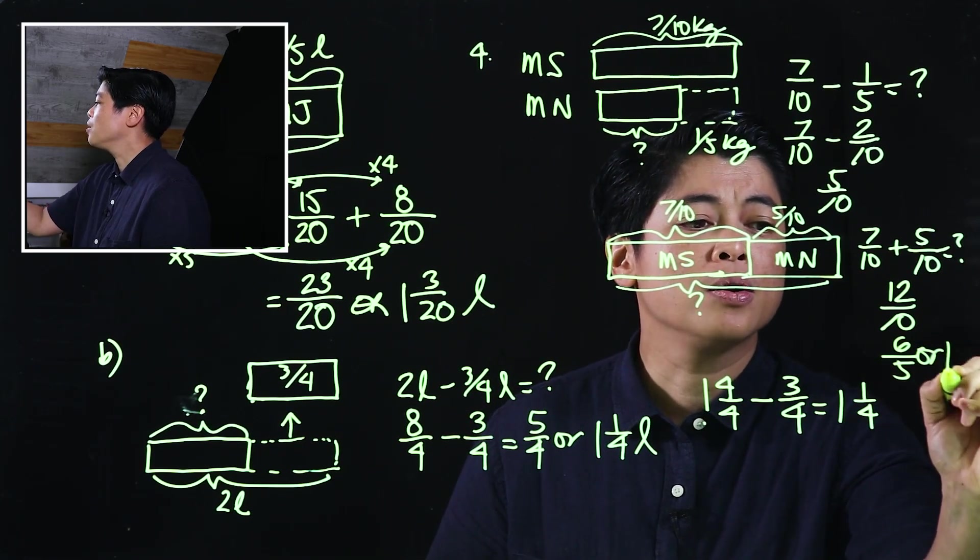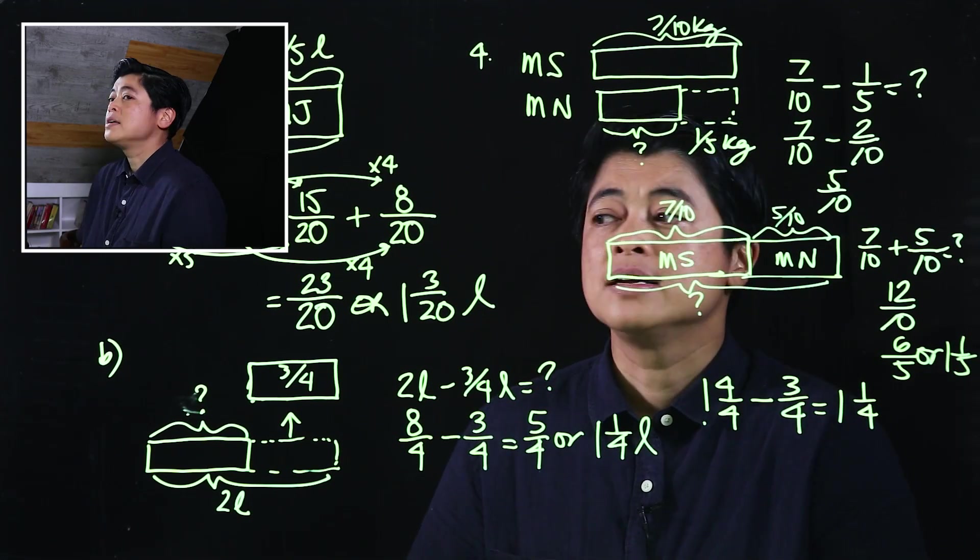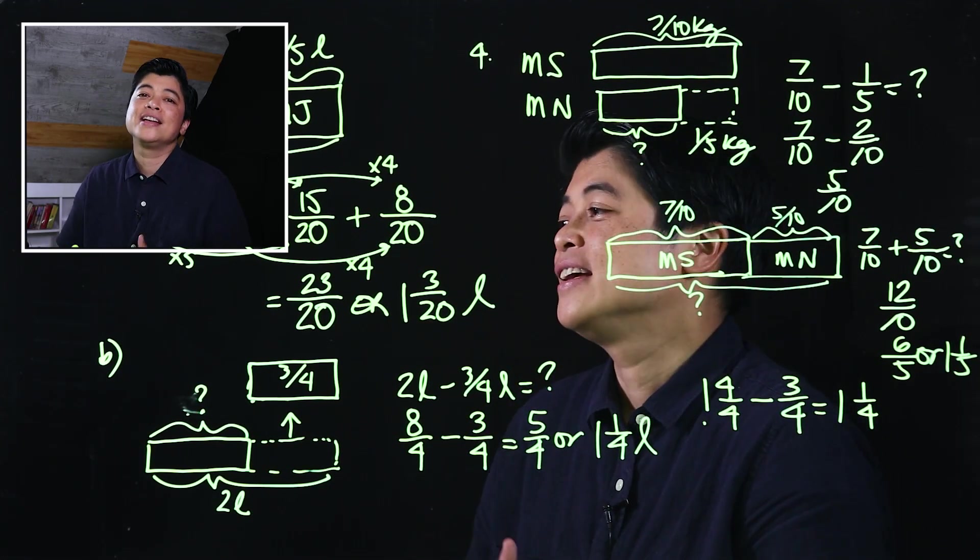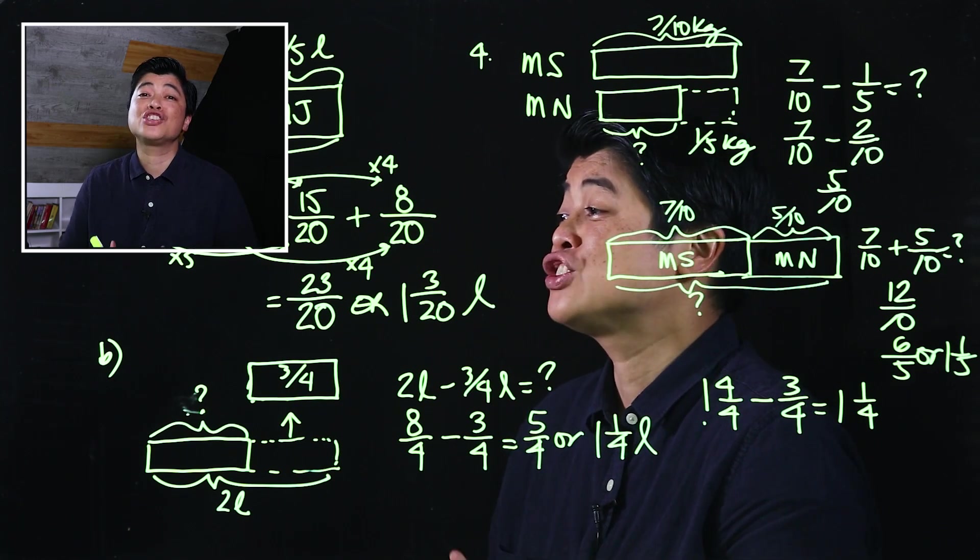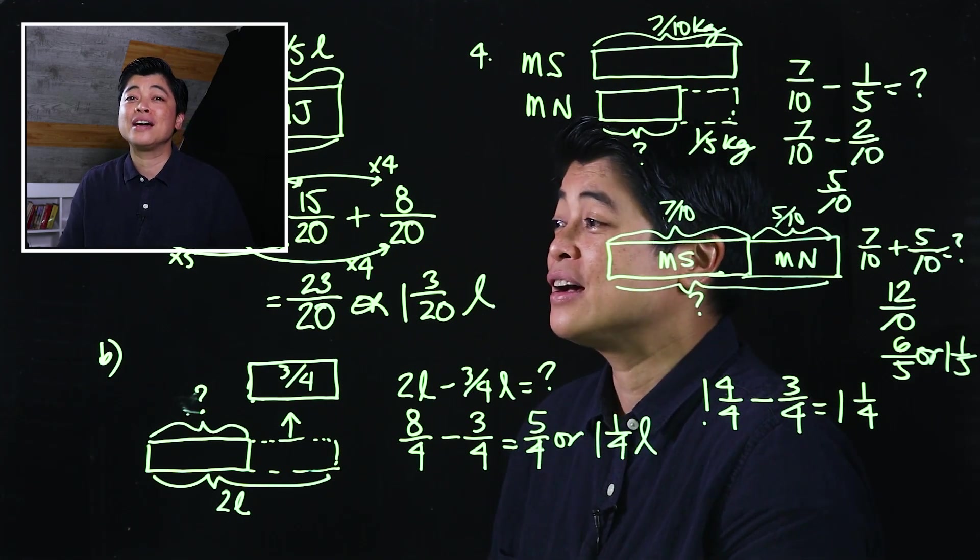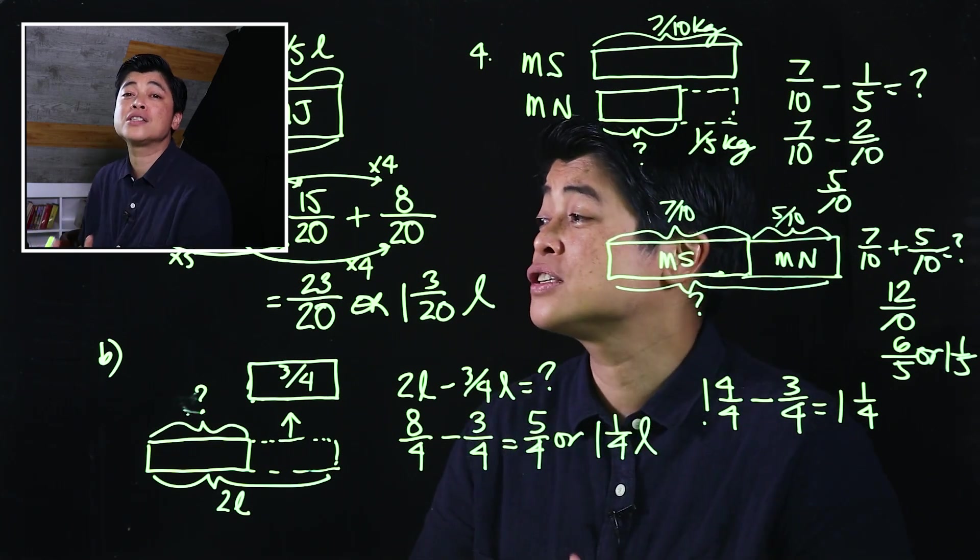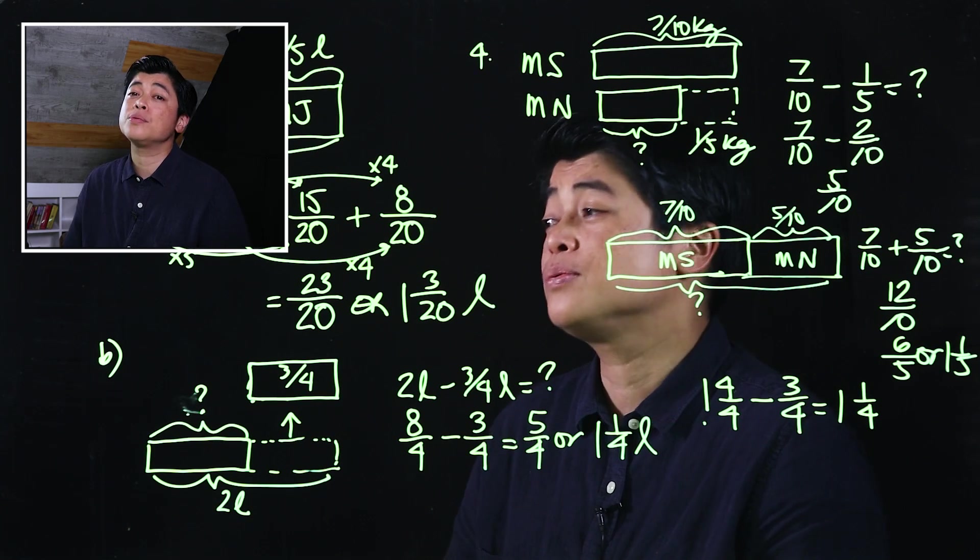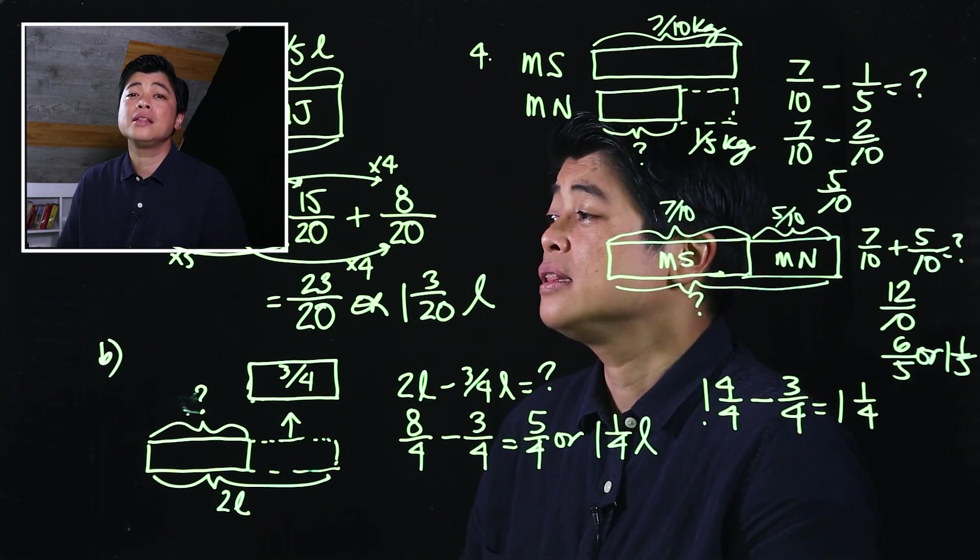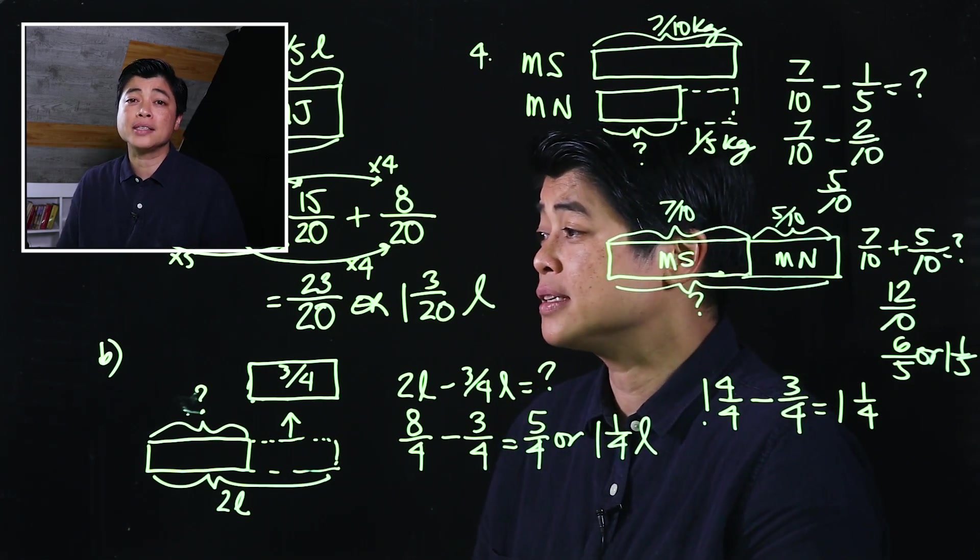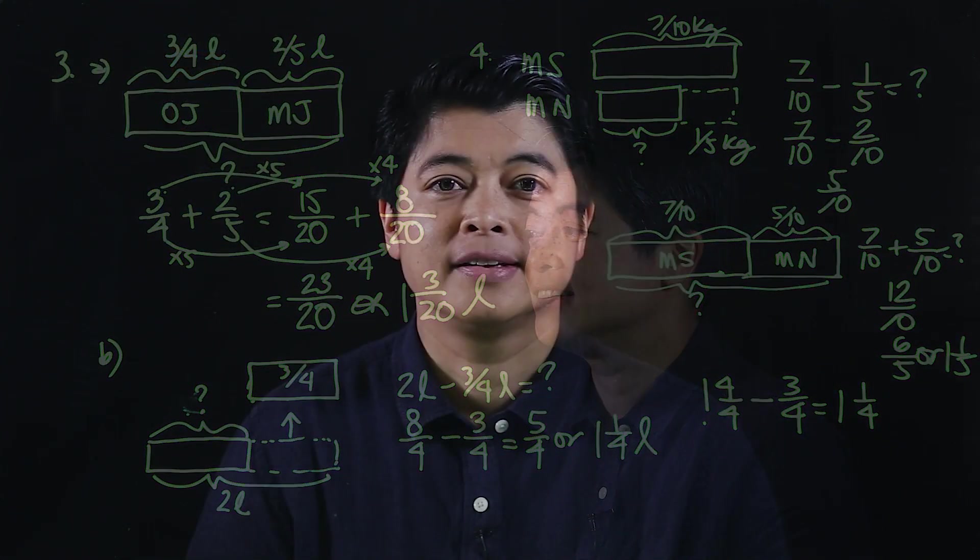Again, the word problems could be challenging. We need the bar models to help us. If it's difficult for the kids, we need to keep refreshing them with the different types of bar models. That concludes lesson two of chapter nine, which also concludes the chapter and the module. I'll see you in the next module.